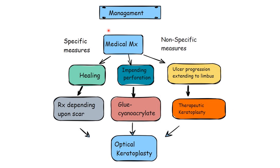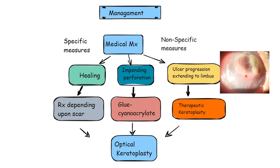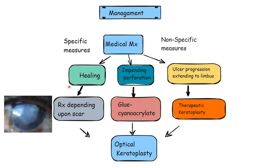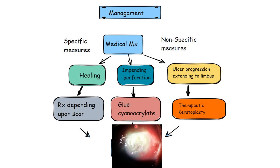Management summary: always start with medical management — specific measures (antibiotics for bacterial, antifungals for fungal) and non-specific measures (same for both). Depending on the ulcer's response: if it heals with a scar, continue medical treatment then plan optical keratoplasty after three to four months. For impending perforation, apply cyanoacrylate glue if small; perform a patch graft for larger perforations.